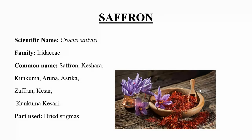The scientific name of saffron is Crocus sativus. It belongs to the family Iridaceae. The common names are saffron, kesara, kunkuma, aluna, asrika, kesar, kesari, etc. The part used is the dried stigma.